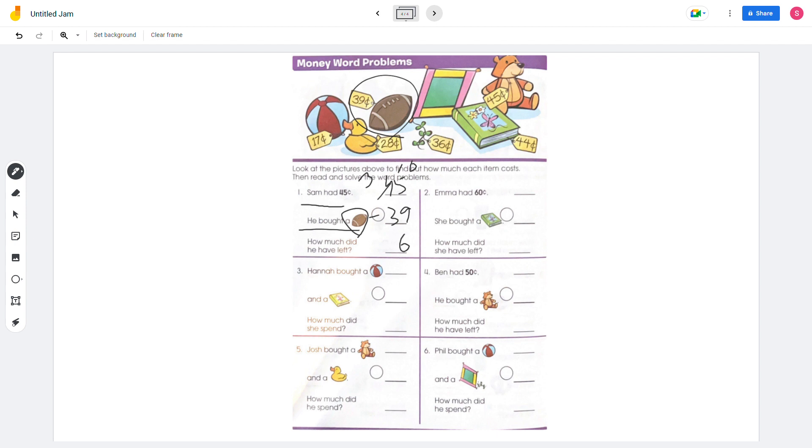Number 2, Emma had 60 cents. She bought a book, and the book costs 44 cents. So we subtract - 6 and 1. So she left with 16 cents.